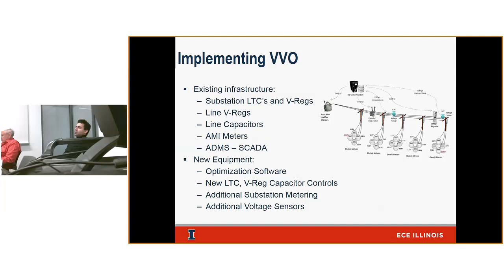It's a closed feedback loop: the system reduces voltage, then goes back to check AMI for violations. If no violations, it looks for further reductions to achieve more savings. The infrastructure for voltage optimization includes LTCs, line voltage regulators, capacitors, AMI meters, and our SCADA system that brings back and compiles all that information, giving the intelligence to figure out what voltage should be across the circuit in real time.